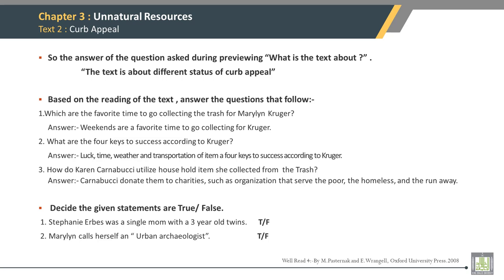The answer to the question asked during previewing — what is the text about: the text is about different stories of curb appeal. Based on the reading of the text, answer the questions that follow. Which are the favorite times to go collecting trash for Marilyn Kruger? Answer: weekends are a favorite time to go collecting for Kruger. What are the four keys to success according to Kruger? Answer: luck, time, weather, and transportation of items. How does Karen Karambuki utilize household items she collected from the trash? Answer: Karambuki donates them to charities such as organizations that serve the poor, the homeless, and runaways.